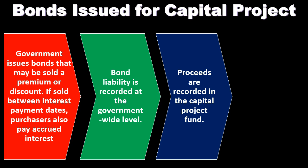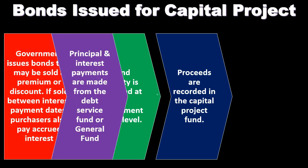At the government-wide level, we debit cash, credit bond payable, and if there's a premium, we credit the premium as well. On the fund side, since we issued bonds to finance a capital project, we typically take the proceeds — equivalent to the face amount of the bond — and record that in the capital project fund. We increase cash, and the other side goes not to a liability but to other financing sources, which is a flow-type account, different from normal accrual accounting.